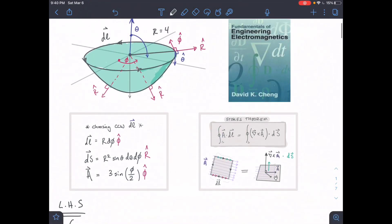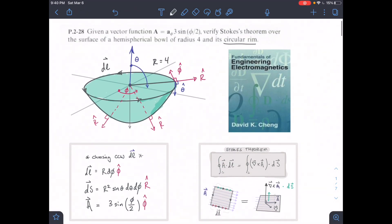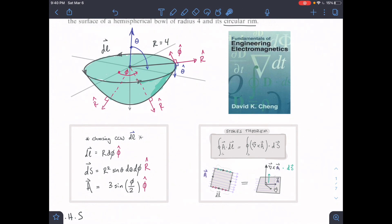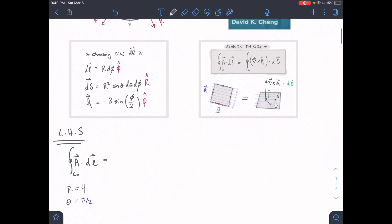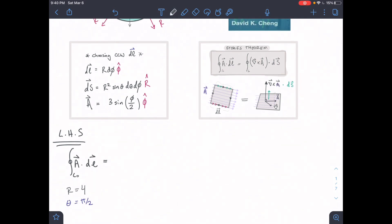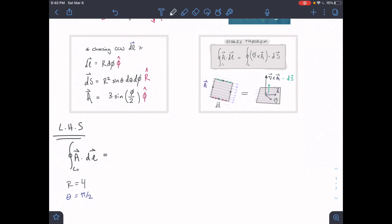Okay, so step one: setting up our A dot DL. We have our DL here and we have our A, and we're going to set up our equation. We have our A, which is equal to 3 sine of - I'll set this guy up right away. Let me grab a thicker pen.